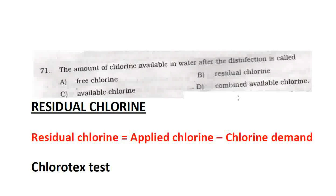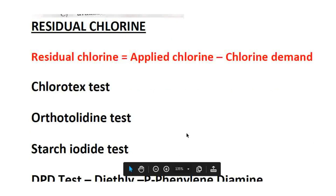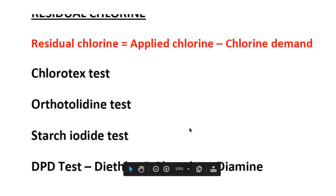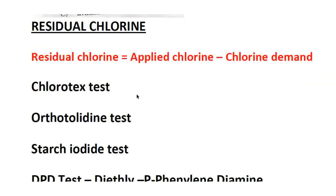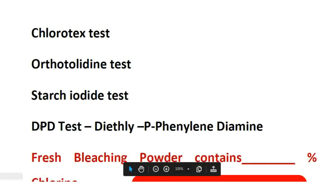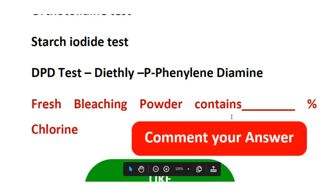Sometimes chlorine demand is mentioned — it is the amount of chlorine that reacts in water. We apply the chlorine dosage. There are 4 types of tests for residual chlorine. One is the DPD test, which stands for diethyl paraphenylene diamine.